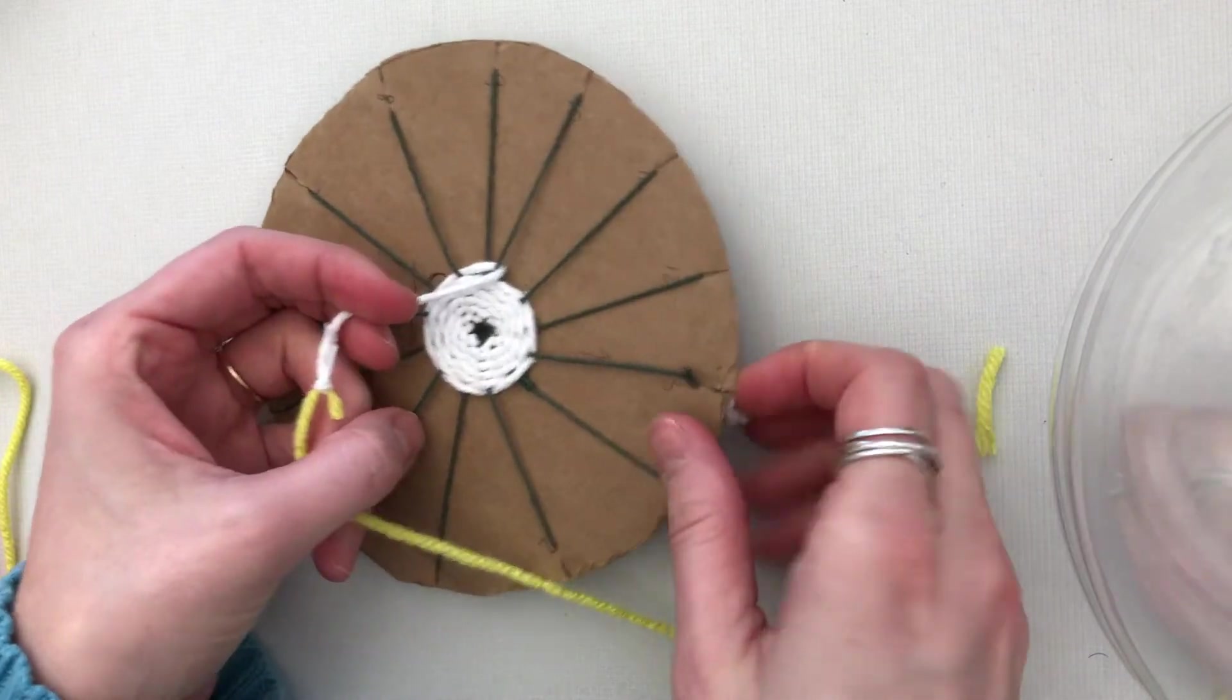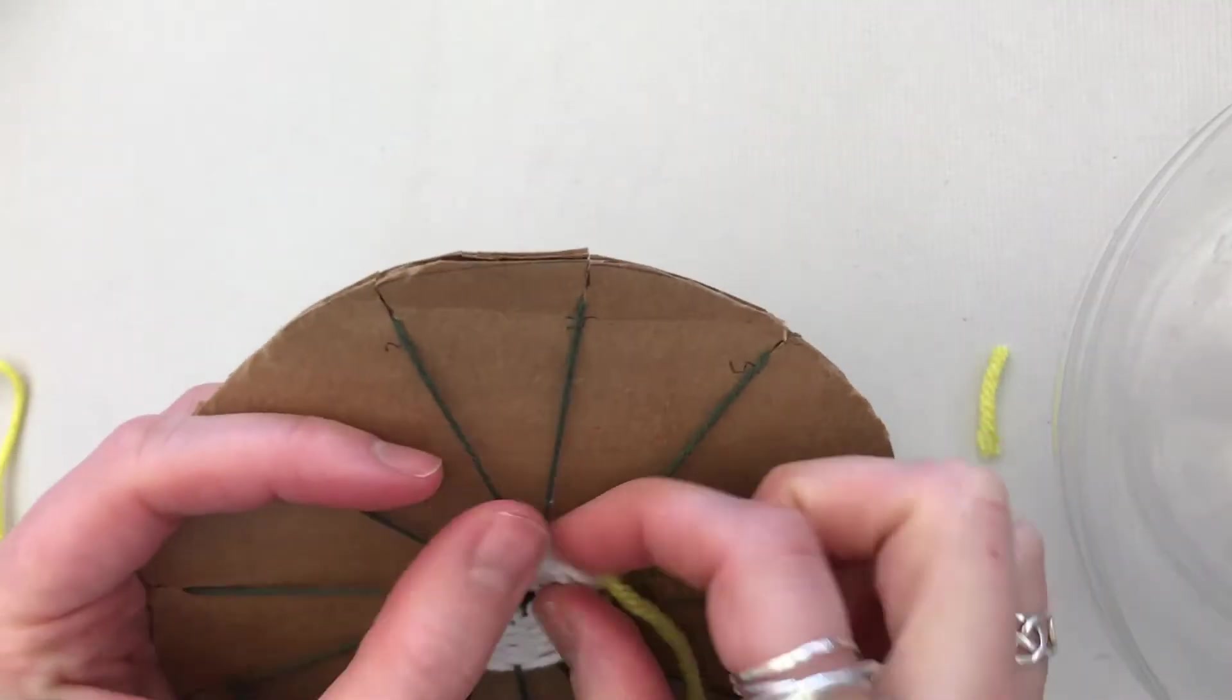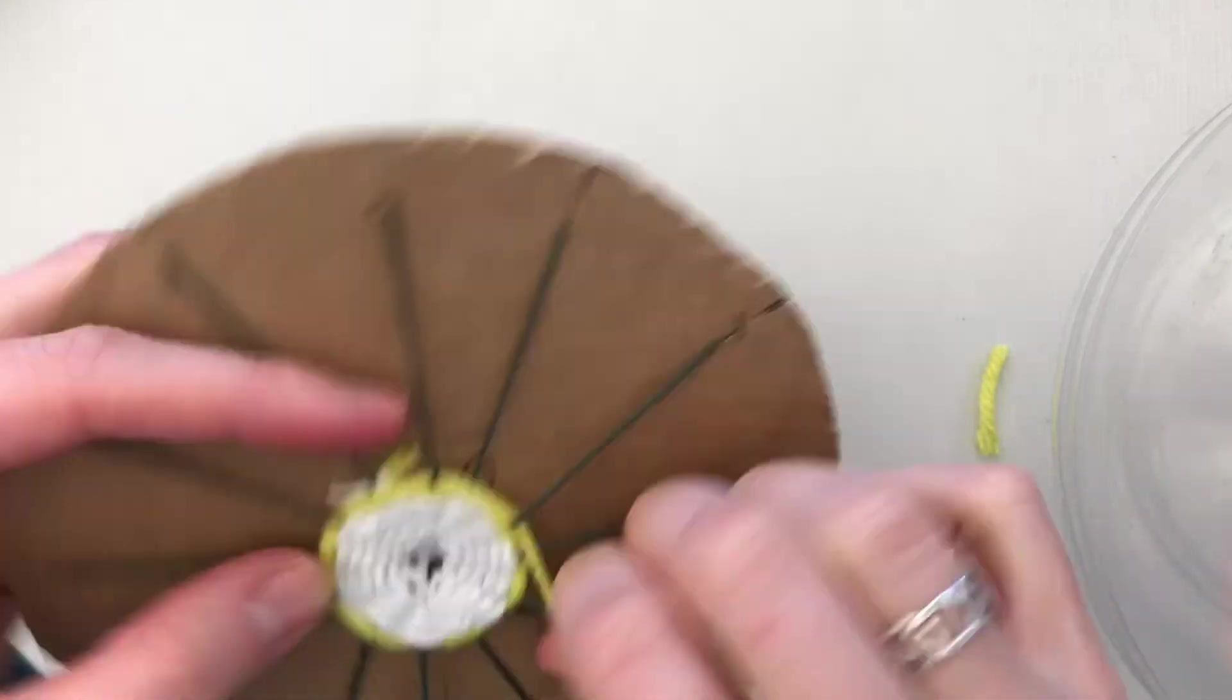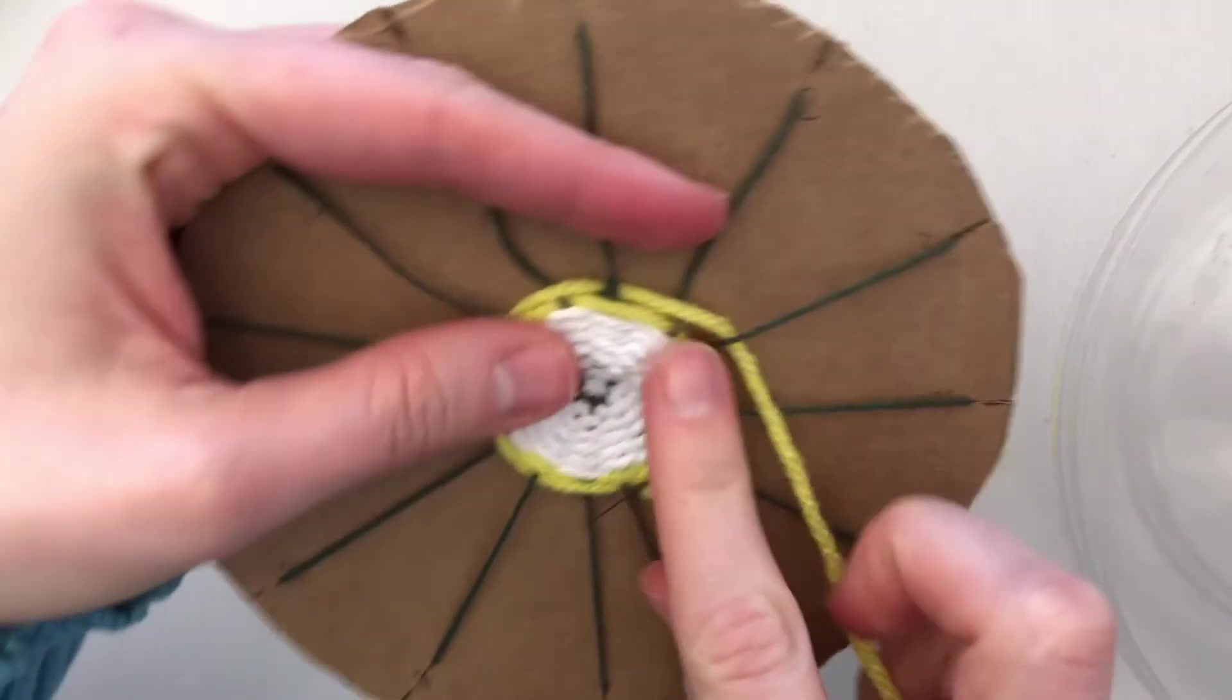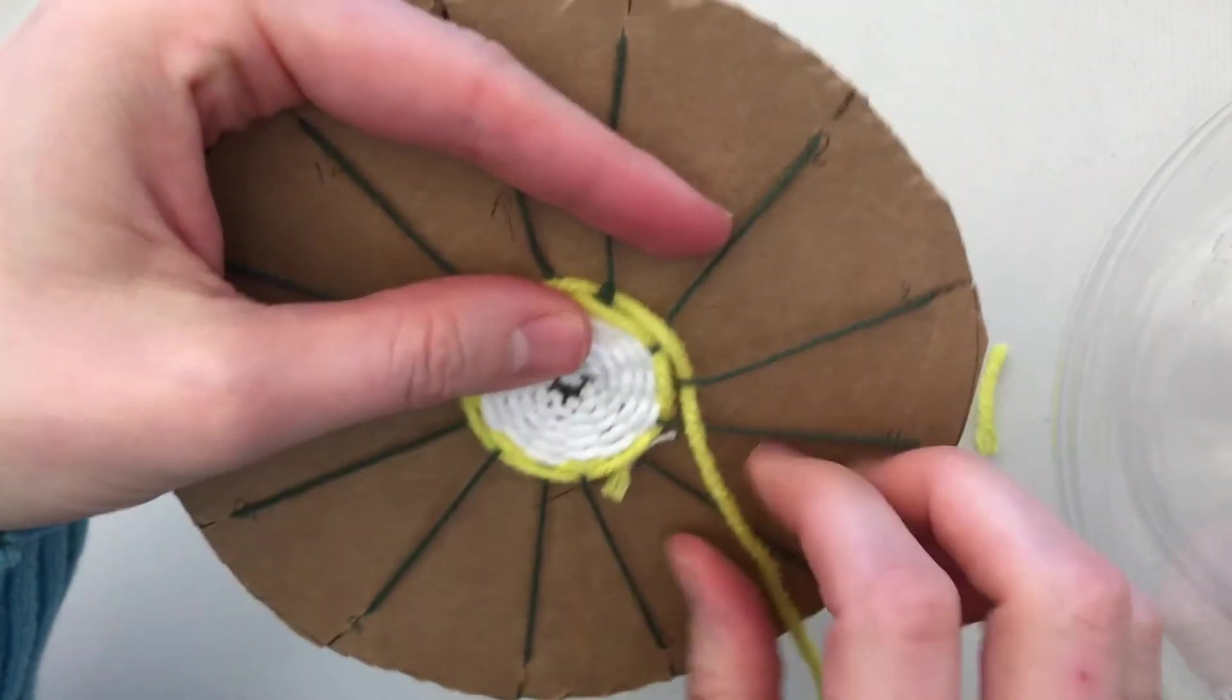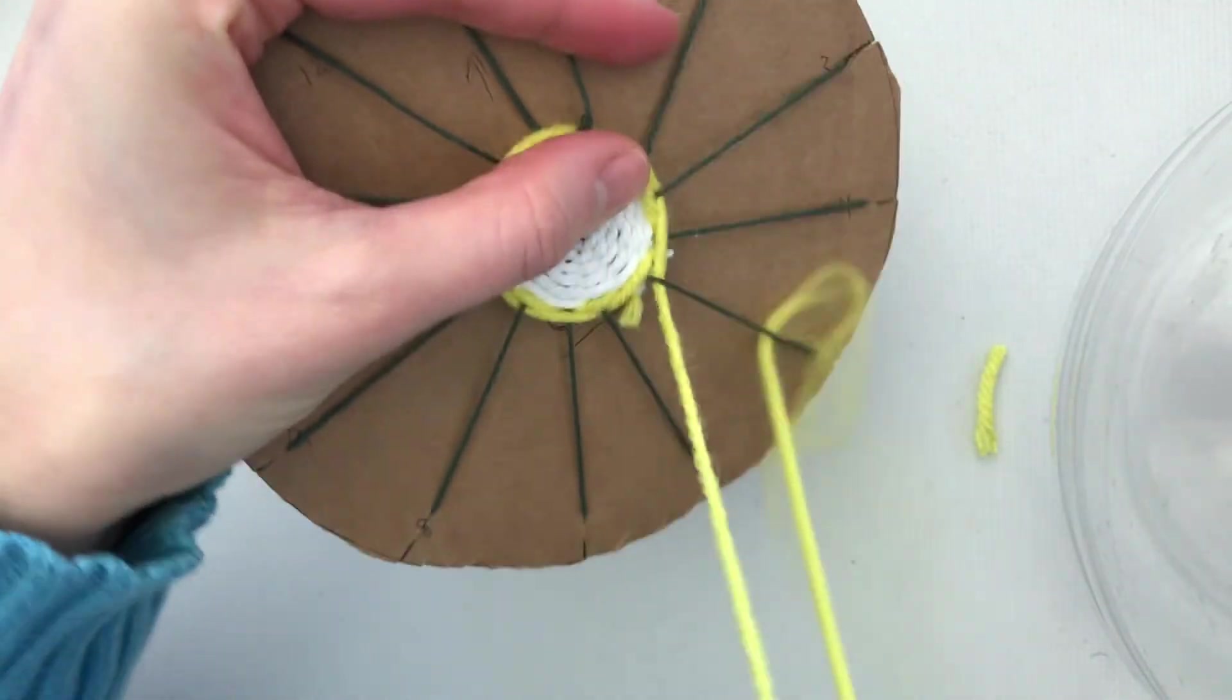Continue your over-under pattern. Some things that some people do is they pull too tight on their yarn here, and then it just starts to bubble up. So if you ever have that problem, then just relax. Don't tug your string so much.